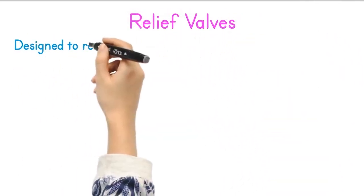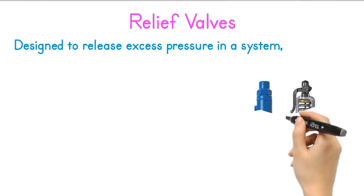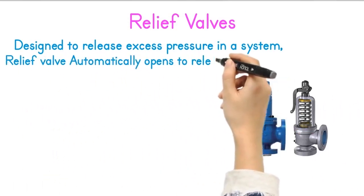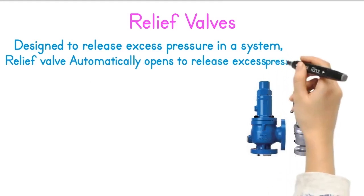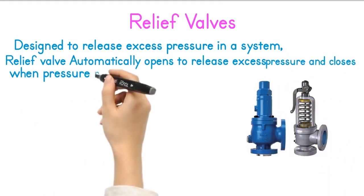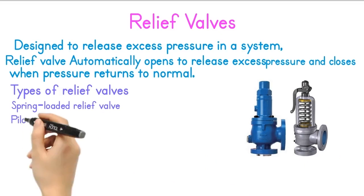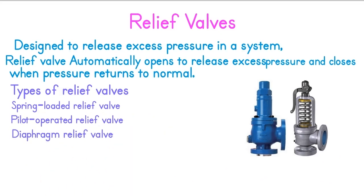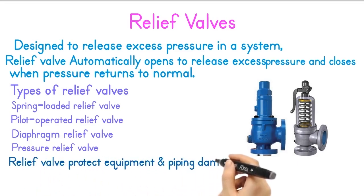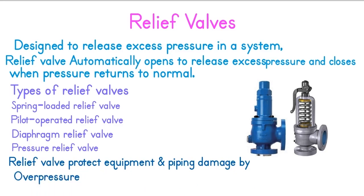Relief valves. A relief valve is designed to release excess pressure in a system — it's like a safety valve. It automatically opens to release excess pressure and closes when pressure returns to normal. Types include spring-loaded, pilot-operated, diaphragm, and pressure relief valves. Relief valves protect equipment and piping from damage caused by overpressure, thermal expansion, and system failure. They are used in power plants, hydraulic systems, chemical processing, and oil and gas industries.